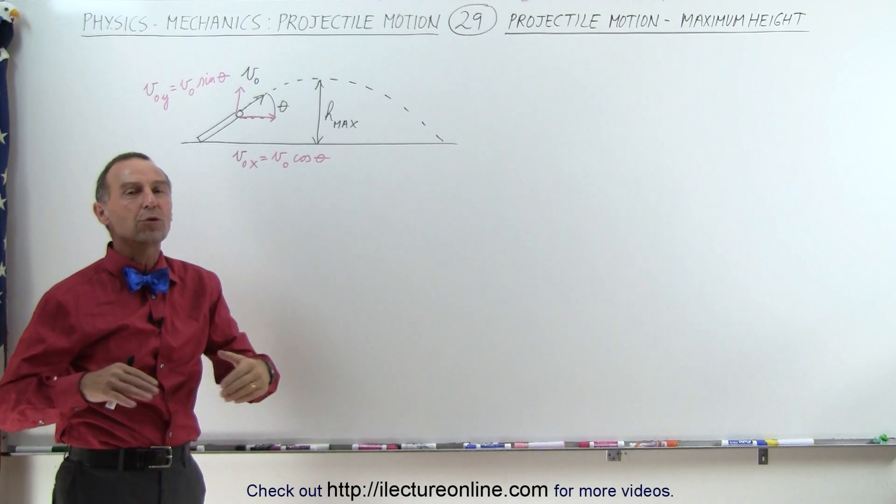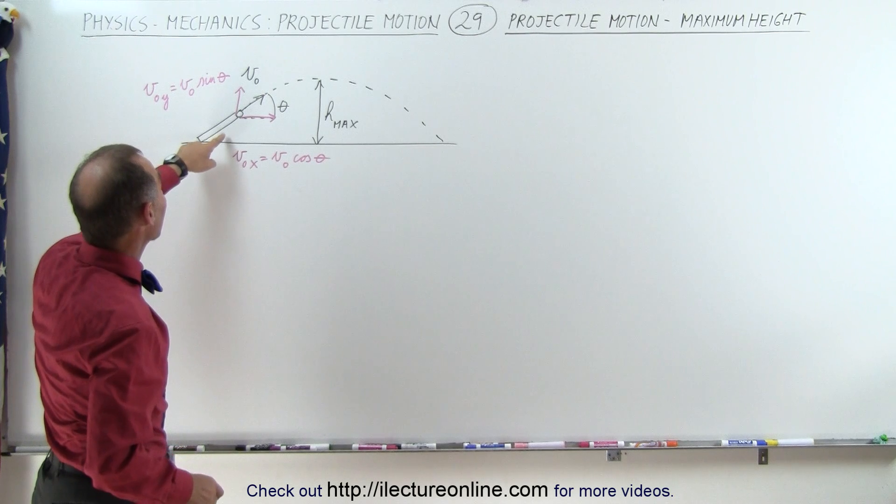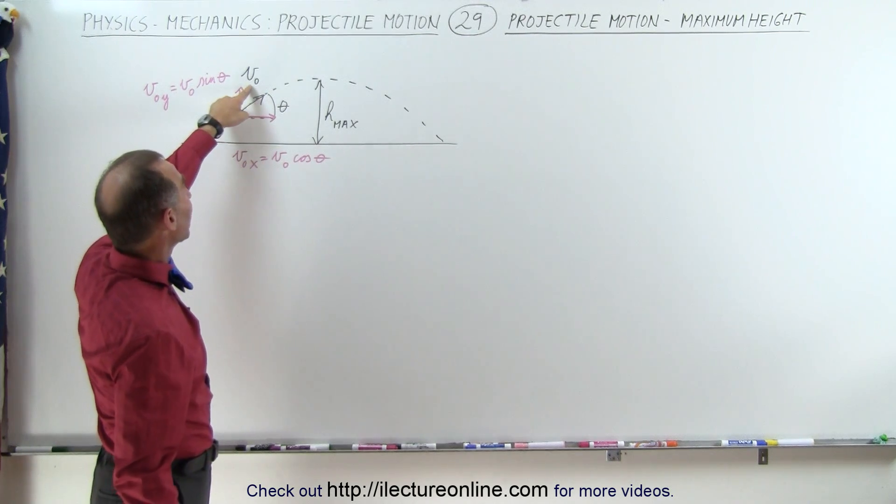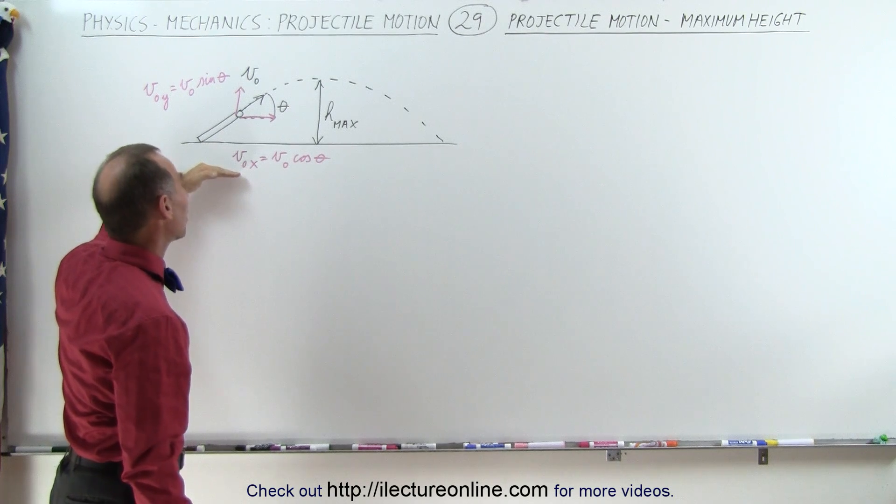Notice in this case we're going to use just a general approach, no numbers, just simply equations. We have an object being fired off at initial velocity v sub-naught, which means it has some horizontal component to that velocity, which is v sub-naught times a cosine of the angle theta.